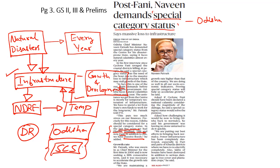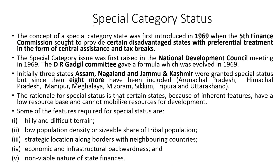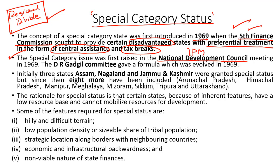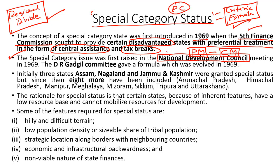In this context let us understand what is meant by the special category status. The concept of special category status was first introduced by the 5th Finance Commission in 1969, because the Finance Commission felt there was a huge regional divide in India as far as development was concerned. The Finance Commission felt that few states suffered from an inherent disadvantage due to their geography and location. So such disadvantaged states should be given preferential treatment in the form of additional central assistance and tax breaks. This concept was discussed by the National Development Council, chaired by the Prime Minister, and the task of working out the criteria and formula for allocation of funds was given to the Planning Commission.